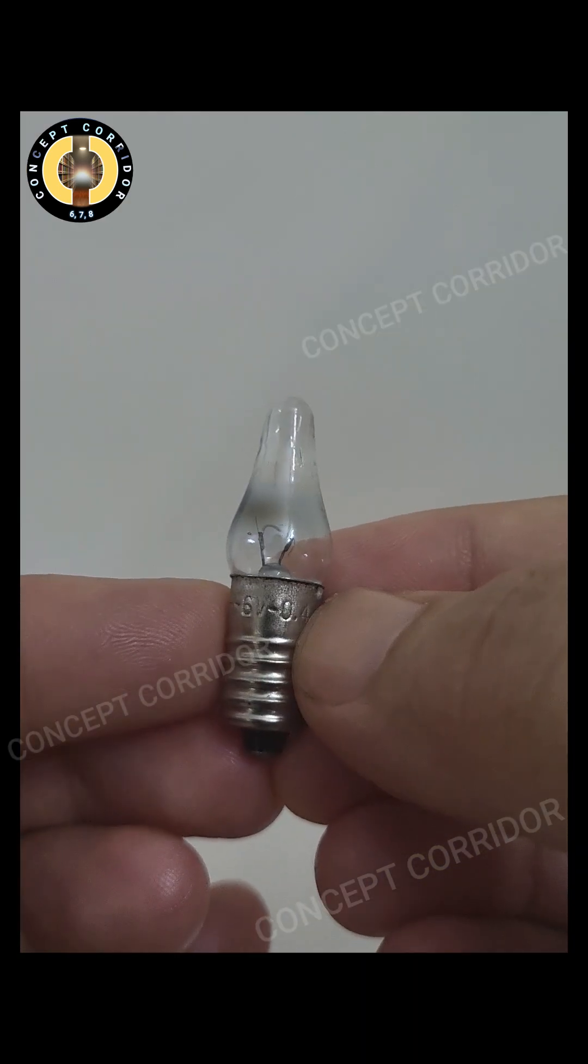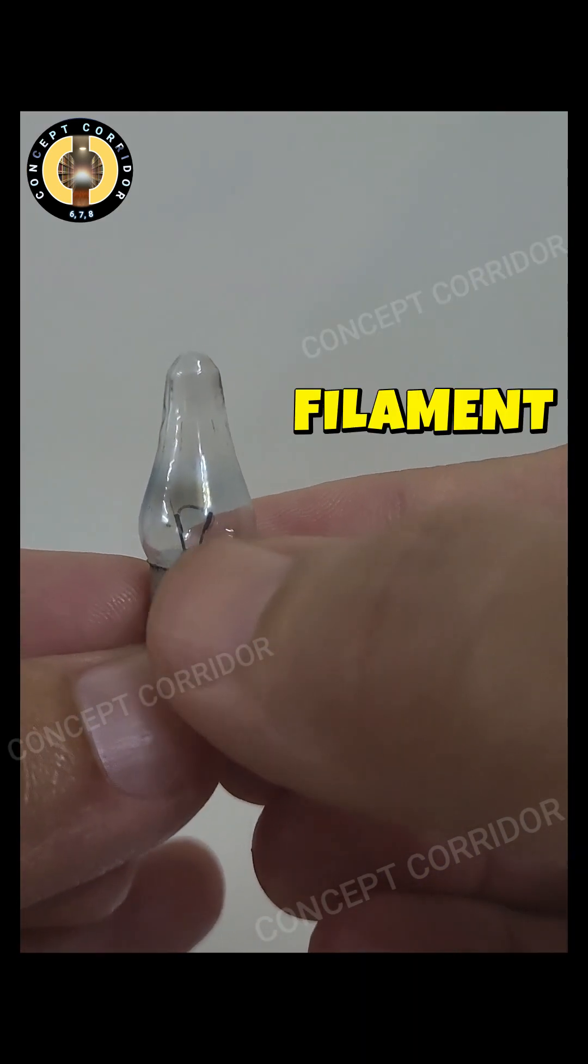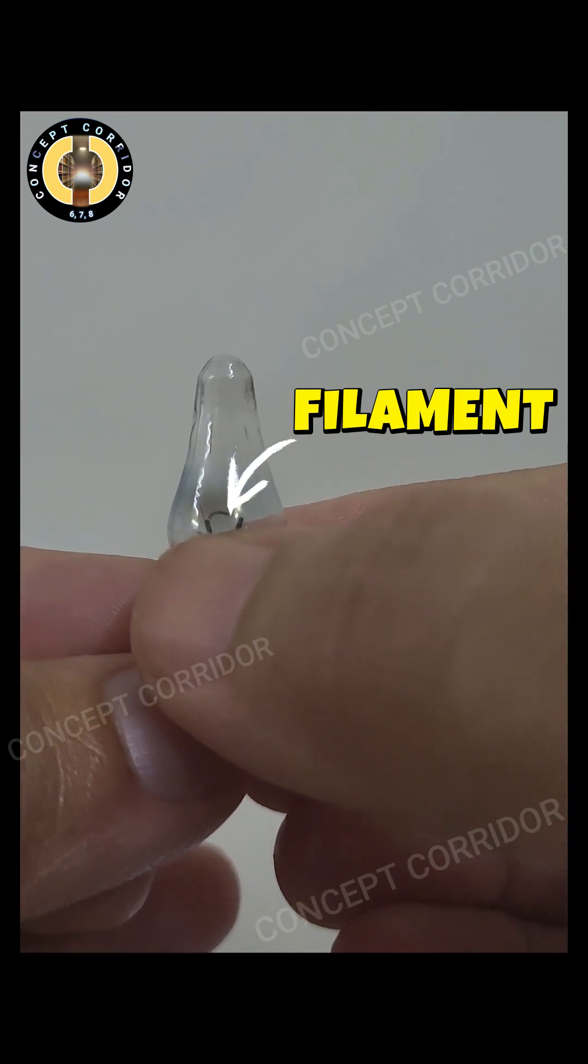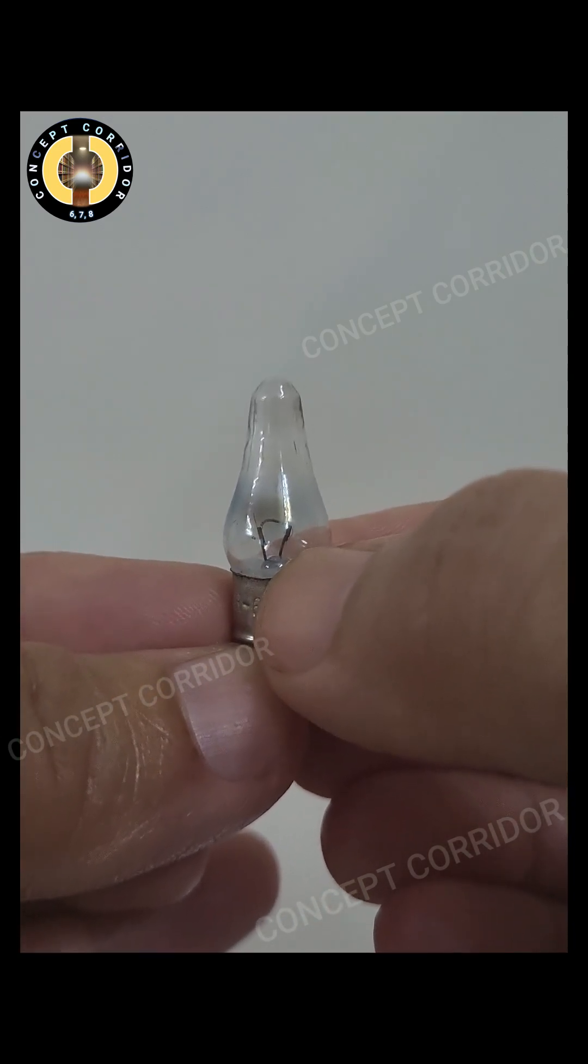First, let's examine their structure. This is the torch bulb. Can you see a thin filament here at the center? This will glow once this torch bulb is connected to the circuit.